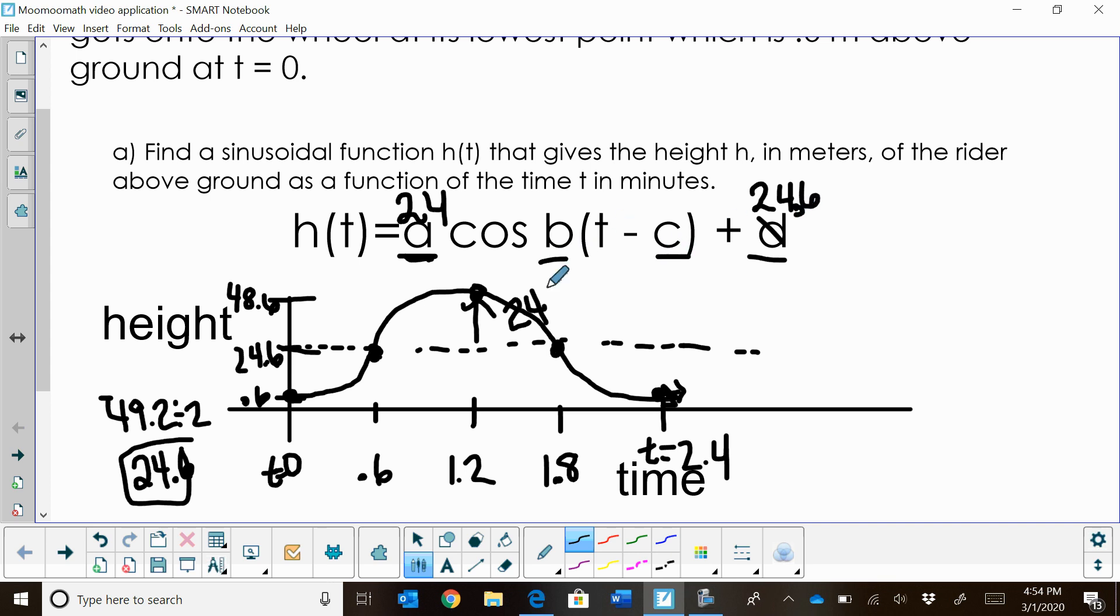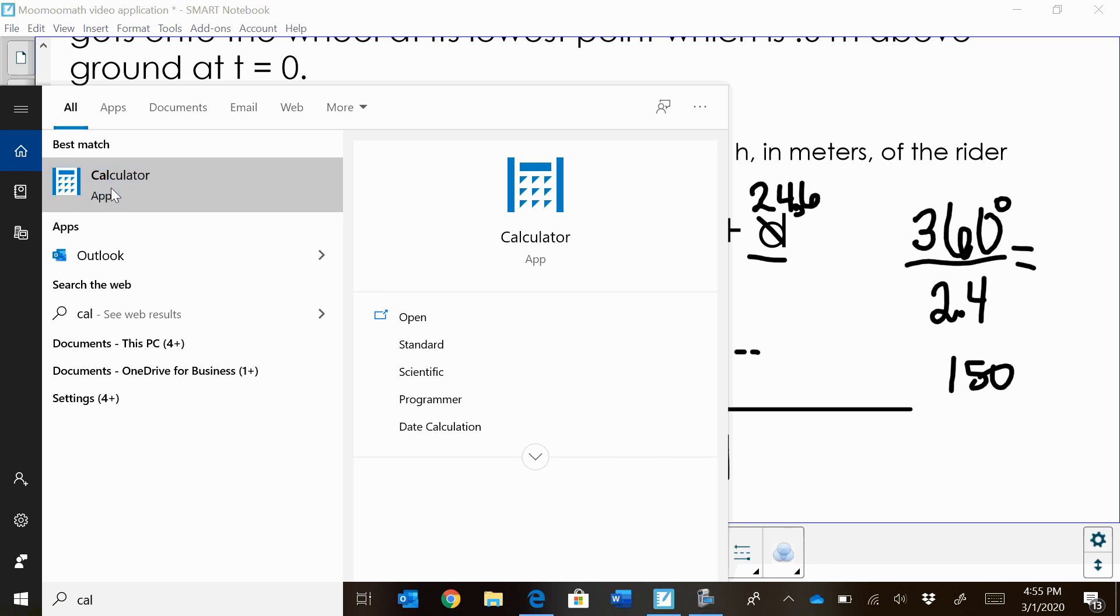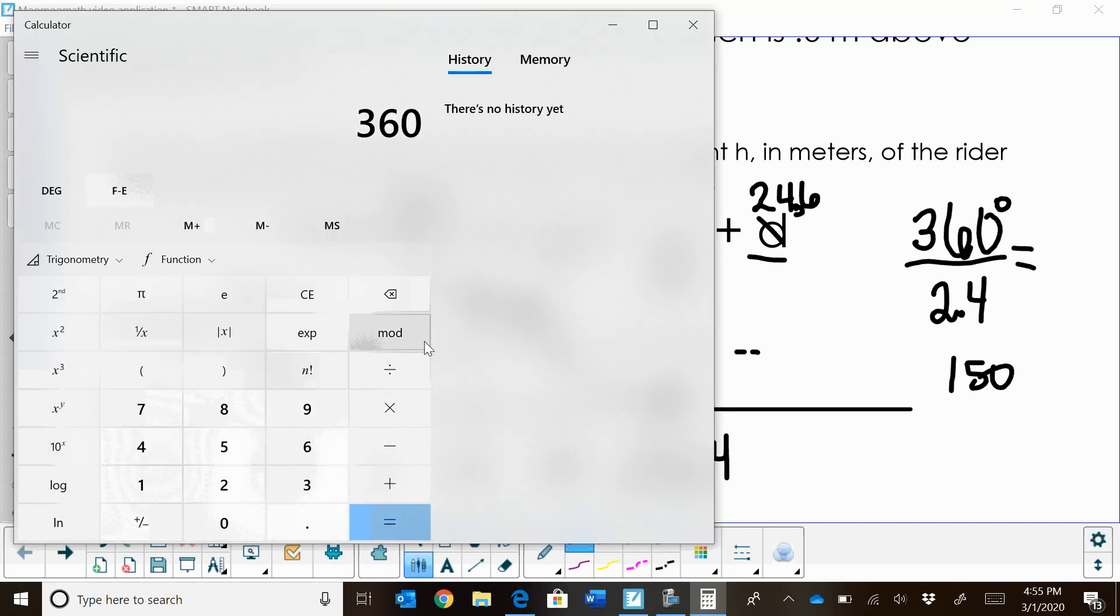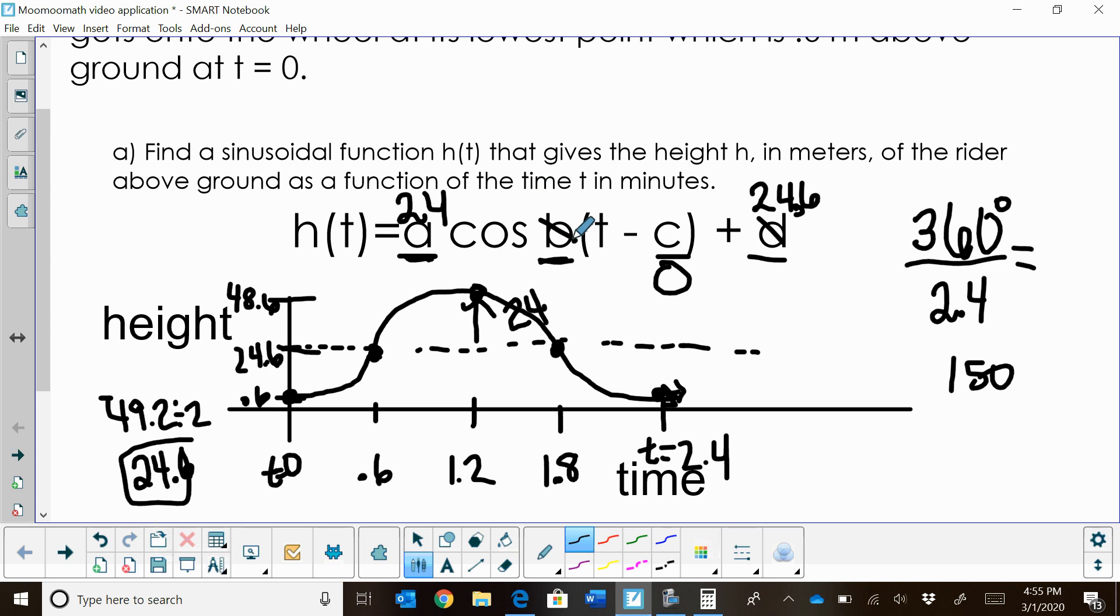B and C. C is my left-right shift. Since I'm writing this in terms of cosine, my left-right shift is 0 because I'm starting right on the y-axis. Now, my B value. B is 360, which is the full period of cosine, divided by the period. Our period starts at 0, ends at 2.4. So I'm going to take 360 divided by 2.4, and that's going to give me 150. So that's the value of B.